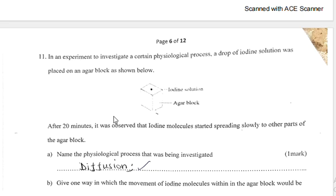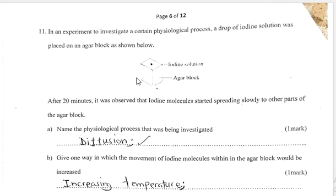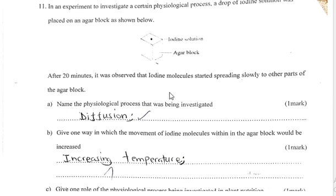Question 11: In an experiment to investigate a certain physiological process, a drop of iodine solution was placed on an agar block. After 20 minutes, iodine molecules started spreading slowly to other parts of the agar block. The physiological process being investigated is diffusion.